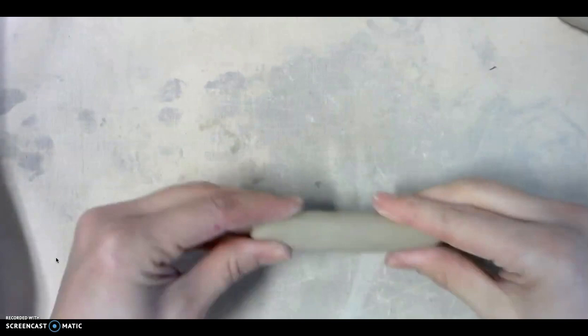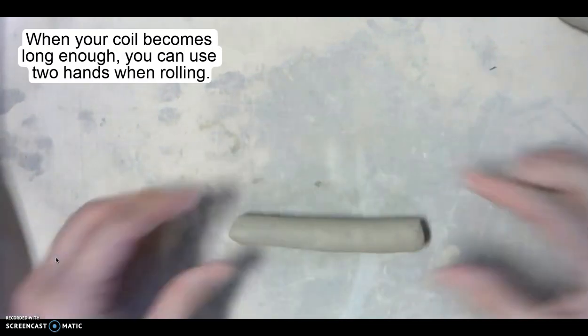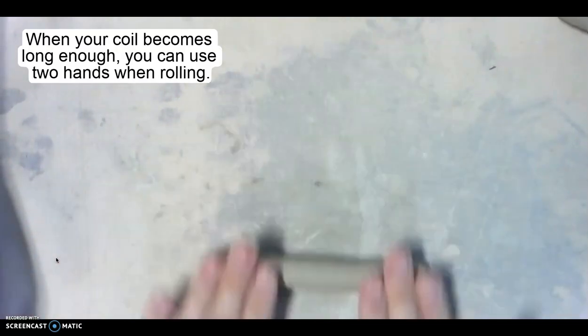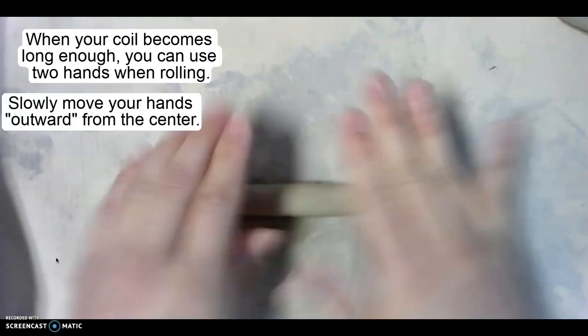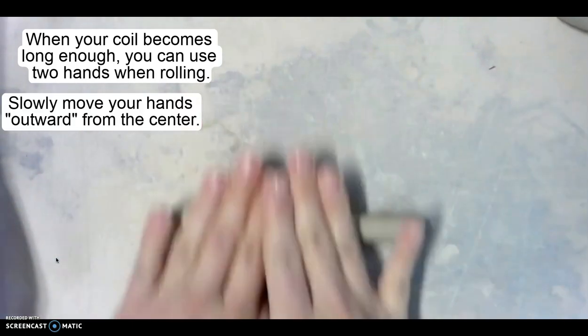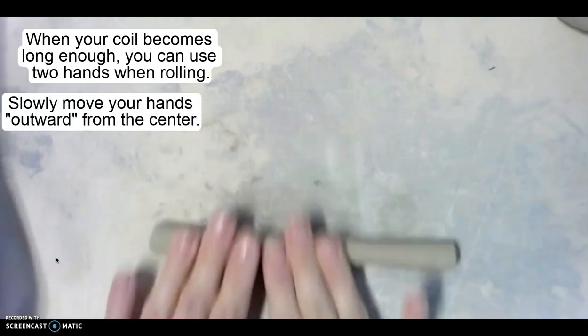So to start rolling, I can use one hand, but at some point the coil gets longer because what's happening is as I'm rolling back and forth, I'm moving my hands outward because I'm trying to get the coil to become a little bit longer.